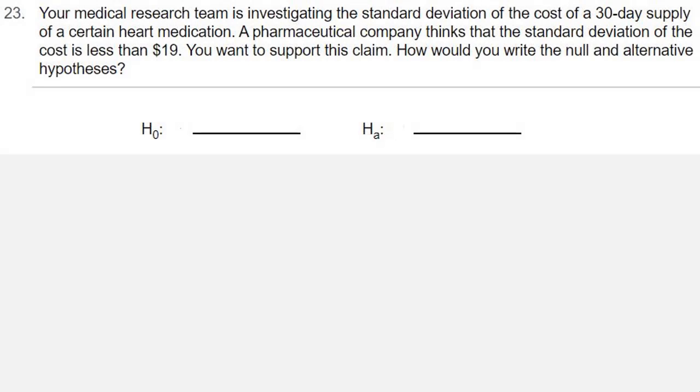Your medical research team is investigating the standard deviation of the cost of a 30-day supply of a certain heart medication. A pharmaceutical company thinks that the standard deviation of the cost is less than $19. You want to support this claim. How would you write the null and alternative hypotheses?